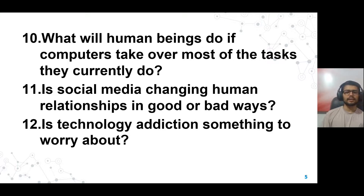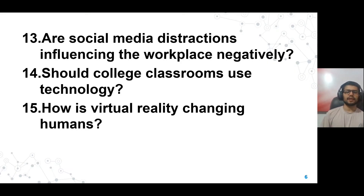Number eleven: is social media changing human relationships in good or bad ways? This is about the effect of social media on relationships and human behavior. Number twelve: is technology addiction something to worry about? Number thirteen: are social media distractions influencing the workplace negatively? Number fourteen: should college classrooms use technology? Number fifteen: how is virtual reality changing humans? This is also a very interesting topic about virtual reality.